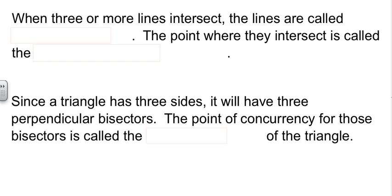Now, there's another idea here. When we have three or more lines intersect, and when I say that, I mean they all intersect at the same place, then the lines are called concurrent lines. Concurrent means they all agree on something.